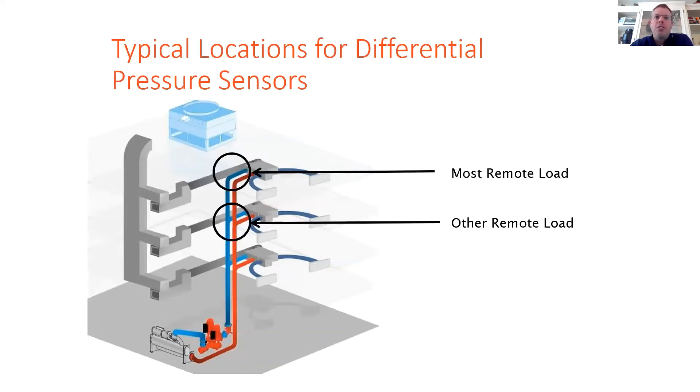So a second option that is sometimes used is mounting the sensor two-thirds of the way down the piping system, and the minimum head set point is now going to be the remaining one-third of the piping, along with the remote loads, control valve, strainer, coil, balancing valve, et cetera. So this minimum differential pressure set point is going to be a little bit higher, but it's going to still allow decent energy savings.